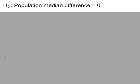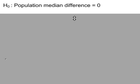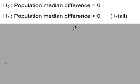H0: the population median difference equals zero. So that's where that zero comes from — if we're saying that the medians for both the mock and the A-level are the same, when you work out the difference between them it'll be zero. And H1: the population median difference is greater than zero.